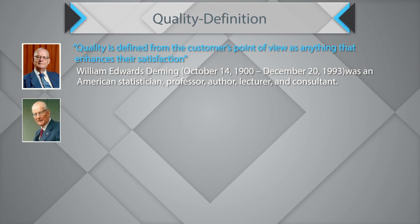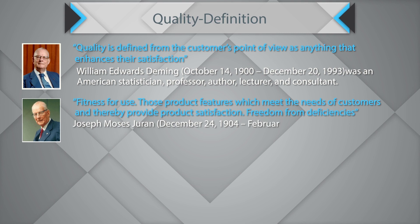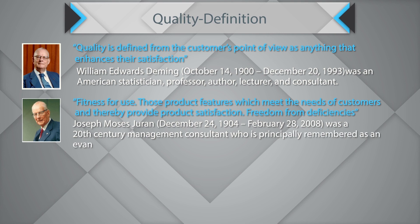Joseph Juran defined quality as: 'Fitness for use — those product features that meet the needs of customers and thereby provide product satisfaction; freedom from deficiencies.' As per Mr. Juran, your product must be fit for use. In the pizza example, not only must the pizza be delivered on time, but it must also be fit for the customer to use.